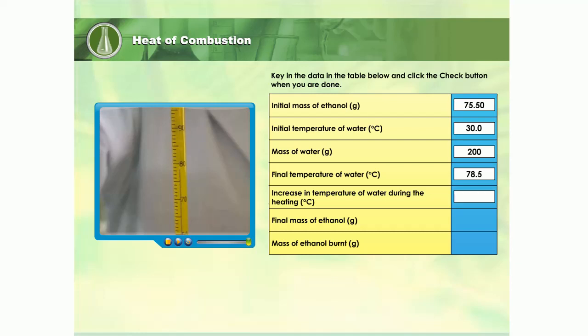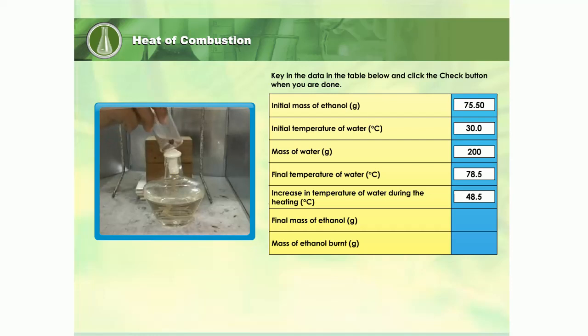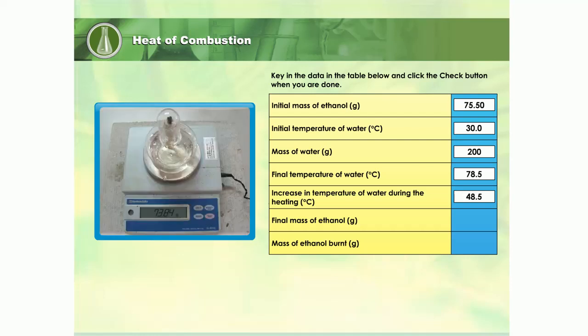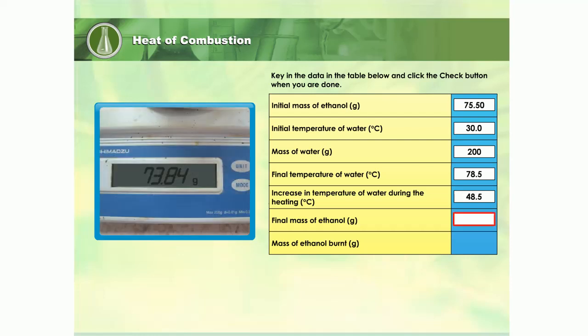Key in your answer in the table. The burner is weighed again on the digital electronic balance. Record its mass in the table. How much ethanol has been burnt during the reaction? Key in your answer in the table.